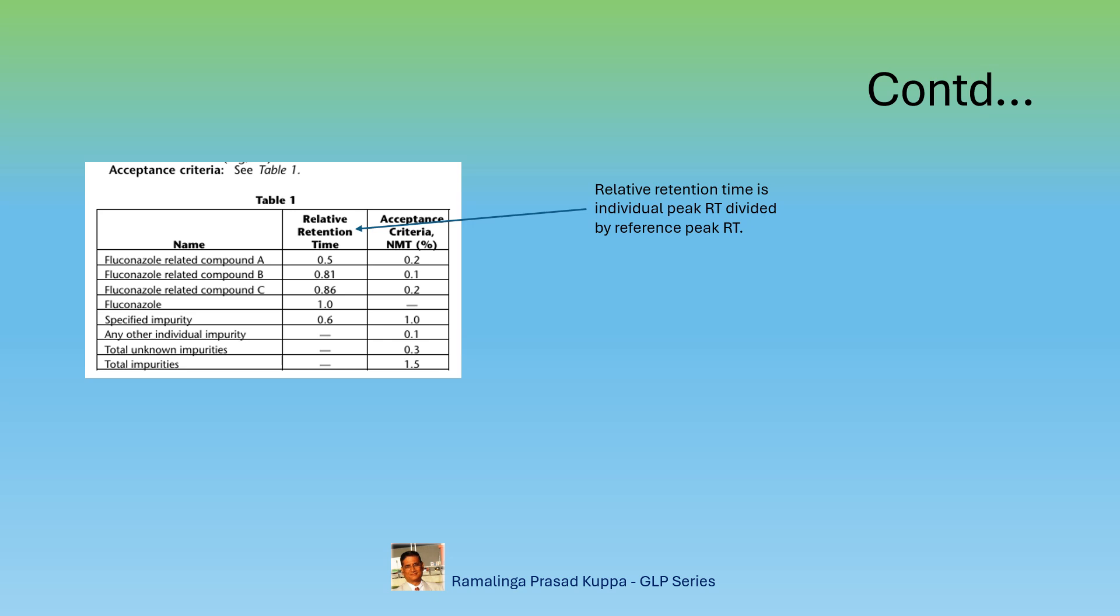Retention time may vary depending upon the column length, flow rate, loading of the stationary phase, column temperature, etc. But relative retention time is constant because it is the ratio with reference to another peak. This is easier way to remember where the peak would appear on the chromatogram.